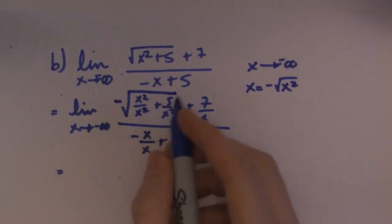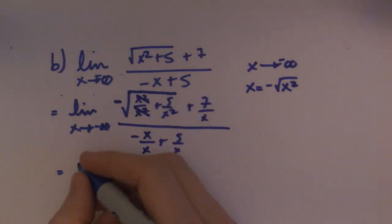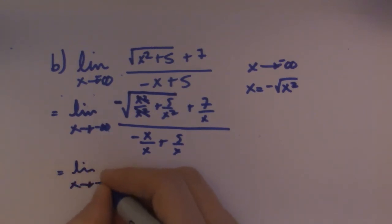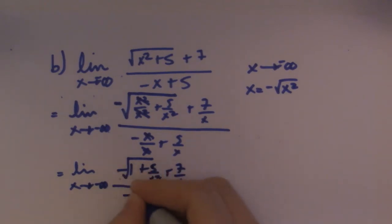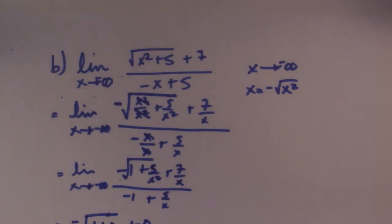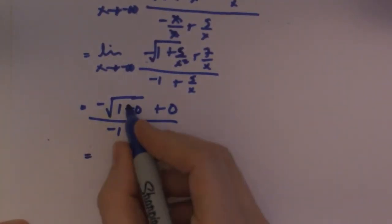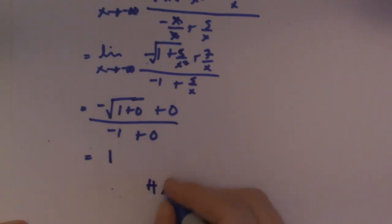Alright, so, what we can go ahead and do now is simplify. Then I have x goes to negative infinity, so I get negative 1, negative root, 1 plus, and then it's 5 over x squared plus 7 over x all over negative 1 plus 5 over x. Then I'll evaluate, so I got negative 1 plus 0 plus 0 all over negative 1 plus 0. And then all I have to do is go ahead and just evaluate this. So I have square root of 1 is 1, negative, so negative over negative is a positive 1. So for this guy, I have a horizontal asymptote of y is equal to 1.